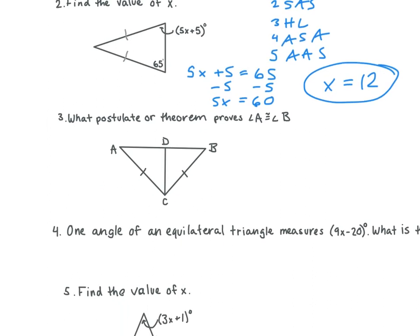Number three. What postulate or theorem proves angle A is congruent to angle B? Isosceles triangle theorem. The isosceles triangle theorem states that if we have an isosceles triangle — here we have ABC is an isosceles triangle — the angles opposite the congruent sides are also congruent. So angle A is congruent to angle B. That's the definition of the isosceles triangle theorem.